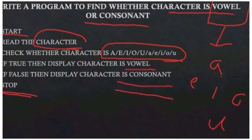We check the condition that the character equals a, e, i, o, or u — considering both lowercase and uppercase. If this condition is true, then we display the character is a vowel; otherwise, we display the character is a consonant.